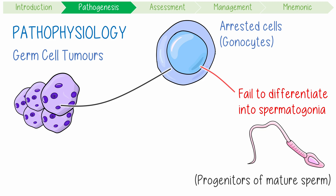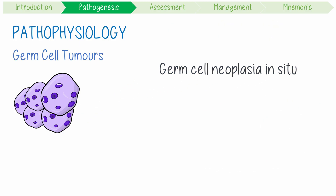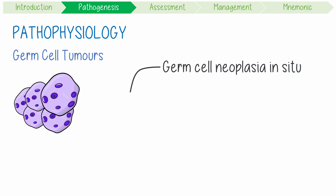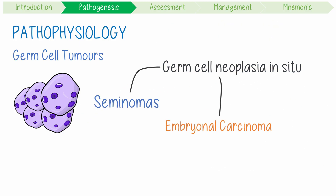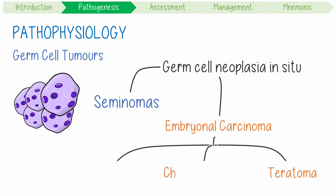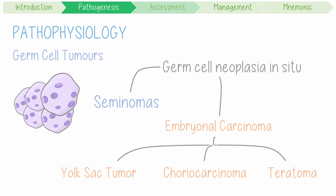These arrested gonocytes transform into malignant germ cells — this is called germ cell neoplasia in situ. At this point, they turn into either seminomas or embryonal carcinoma, which can further differentiate into either teratomas, choriocarcinomas, or yolk sac tumours.